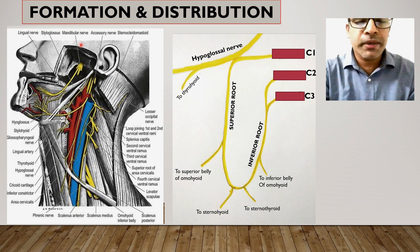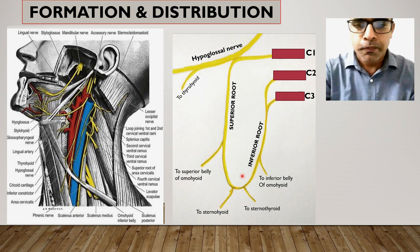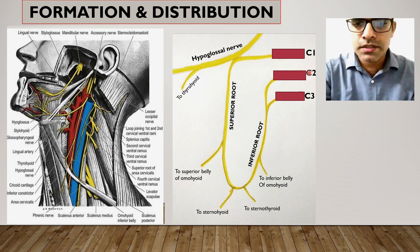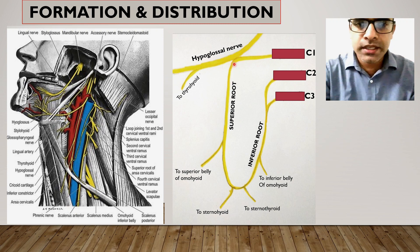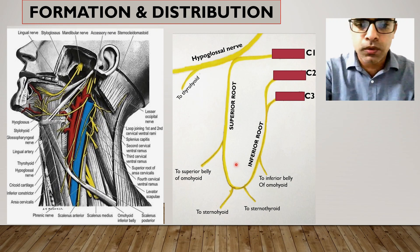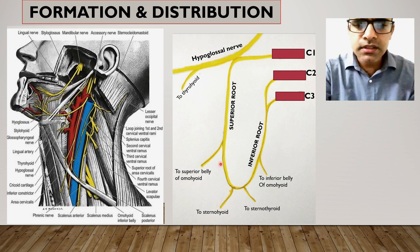Let us see how the ansa cervicalis is formed and where it distributes. The ansa cervicalis is contributed from spinal segments C1, C2, and C3 — that is the first, second, and third cervical spinal segments. It is formed by two roots: one from above, called the superior root, and one from below, called the inferior root. These two roots unite to form the ansa, and this union happens in relation with the carotid sheath.